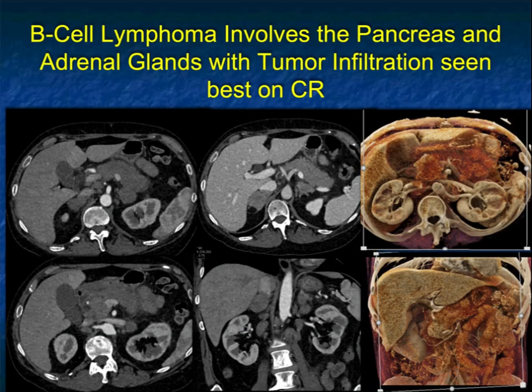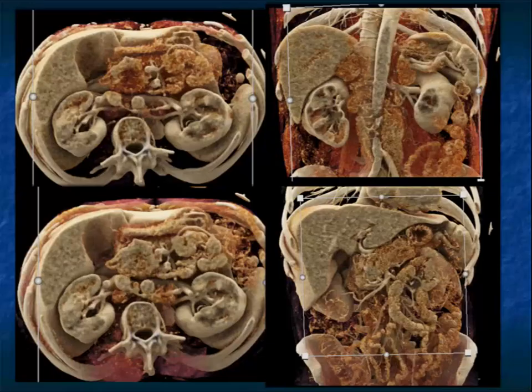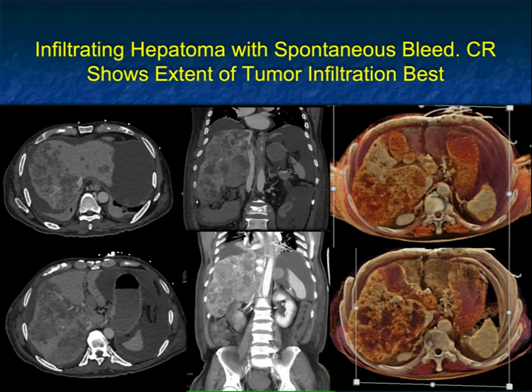Here's another patient with B-cell lymphoma involving the pancreas and adrenal glands — the tumor infiltration is best seen on the cinematic rendering. Yes, on the axials you see the masses in the adrenal and the pancreas, but look at the textural changes when you look at cinematic rendering. These images also show the adrenal involvement as well as the pancreatic involvement, and how well we can standardize imaging technique acquisition and display will really determine how well we can drive this technology.